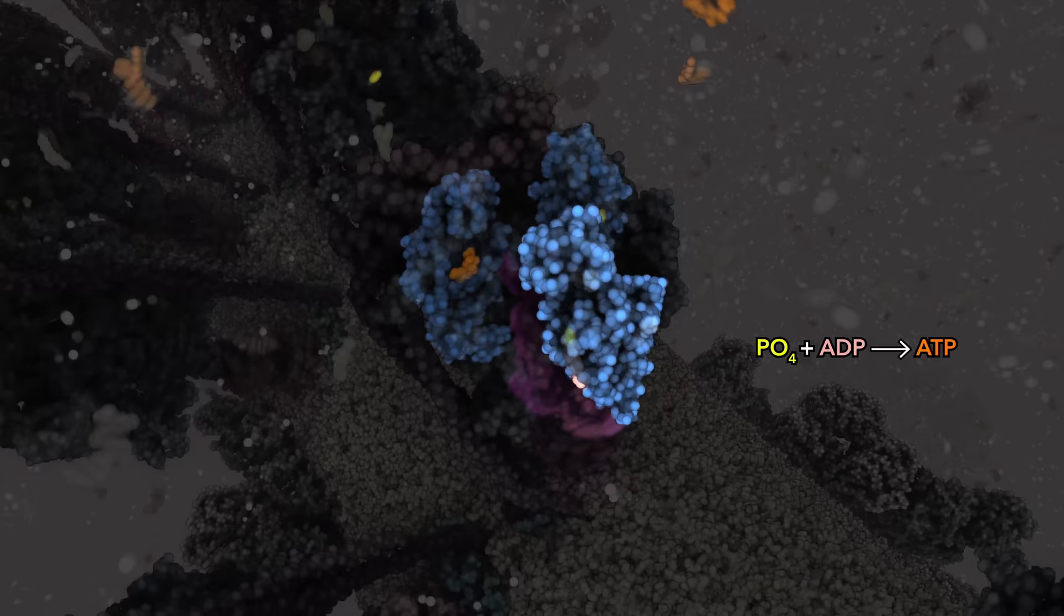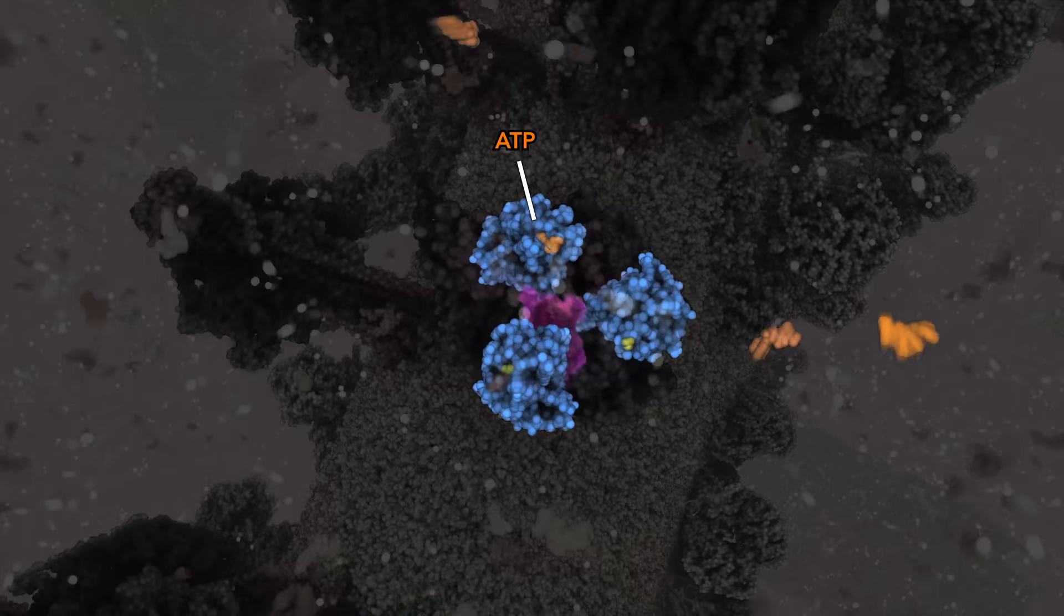A ring of enzymes work in step, creating three molecules of ATP with each cycle.